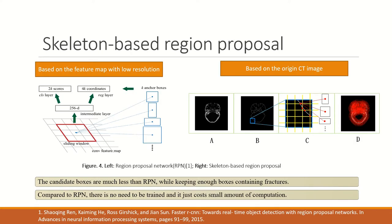When you see the CT slice, the first feeling may be that this image is somewhat empty. The useful information is just the white parts — the skull. RPN generating candidate boxes over the entire image is therefore not appropriate. We discovered a simple principle: skull fractures only distribute on the skull. Thus, based on the raw image directly, we first obtain the skeleton of the skull, and all candidate boxes are generated over the skeleton. This results in a smaller number of candidate boxes that still contain the fractures.